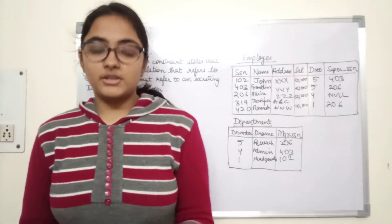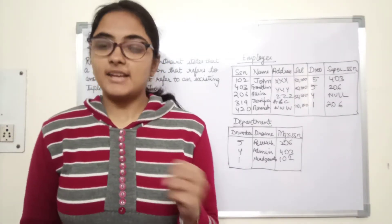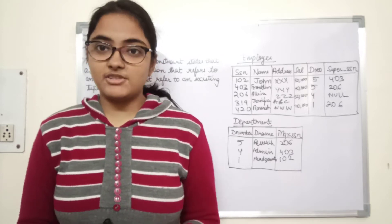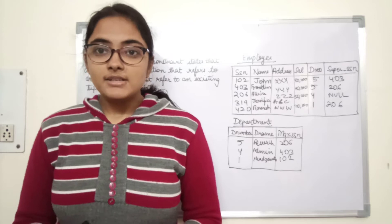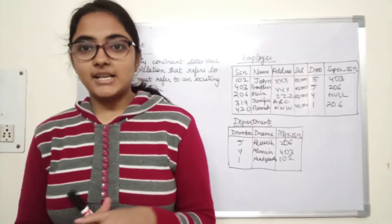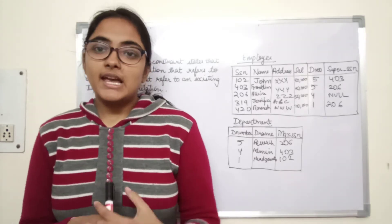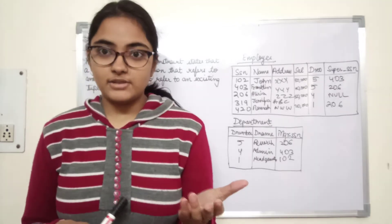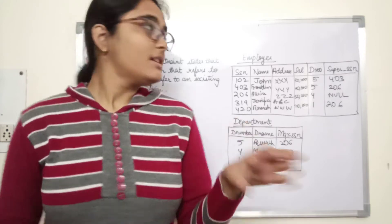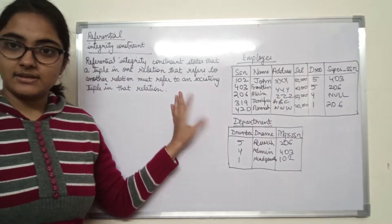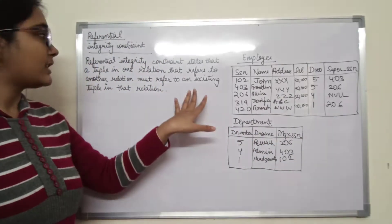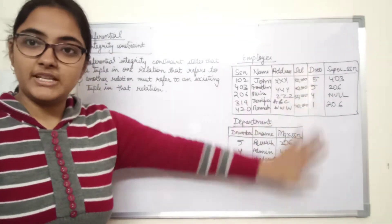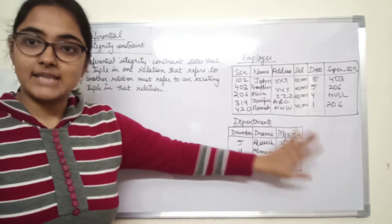Till now we discussed about domain constraints, key constraints, and entity integrity constraints. So in this video we are going to be discussing about referential integrity constraints. Referential integrity constraint states that a tuple in one relation that refers to another relation must refer to an existing tuple in that relation. Now let us understand with the help of these two tables what these constraints actually mean.